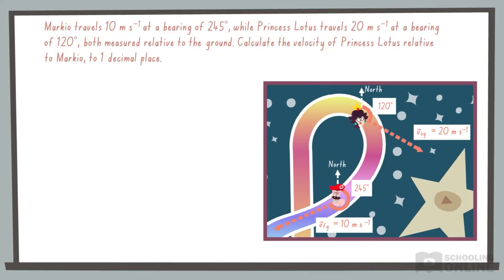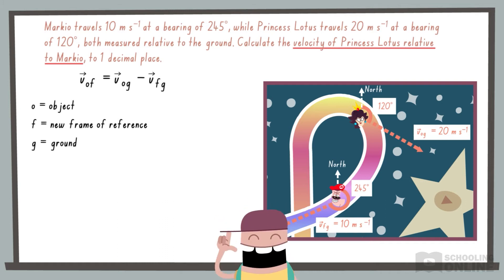Our task is to calculate the velocity of Princess Lotus relative to Markio. Since we are dealing with 2D vectors, it's too difficult to calculate the answer in our heads. So we're going to apply the relative velocity equation.